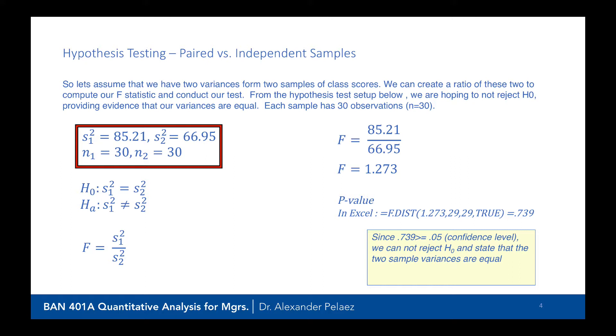We set up our null hypothesis that the two variances are equal to each other. Our alternative hypothesis is that they're not equal to each other. So we calculate our F-statistic as a simple ratio or fraction, 85.21 divided by 66.95. And our F-statistic is 1.273.